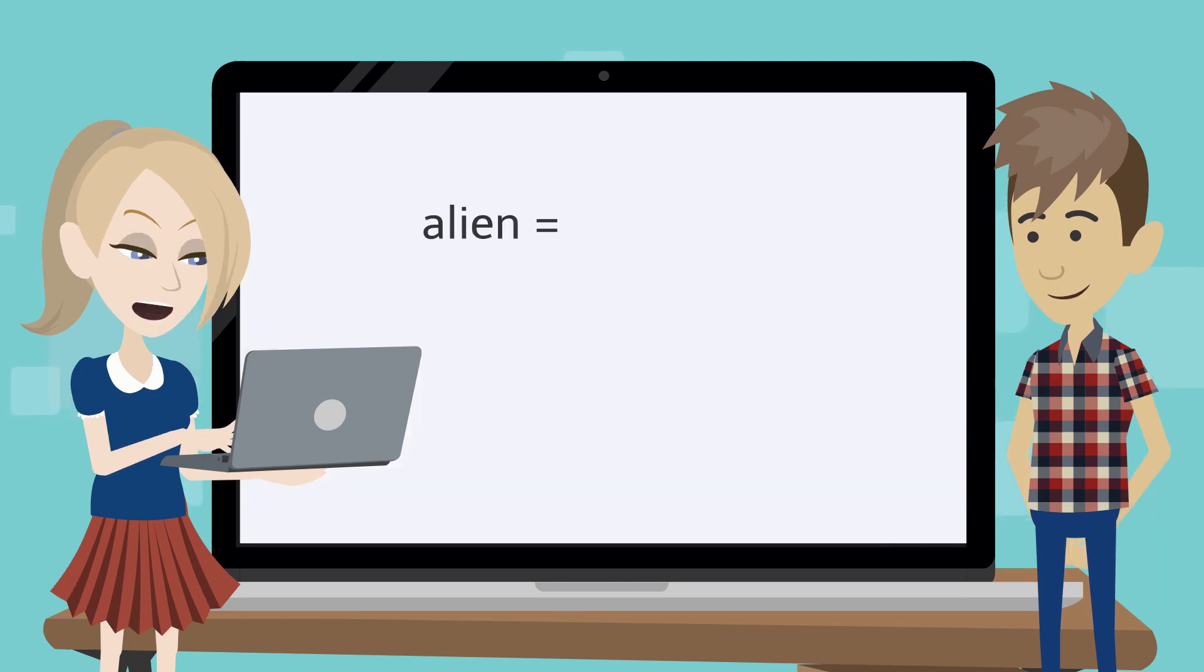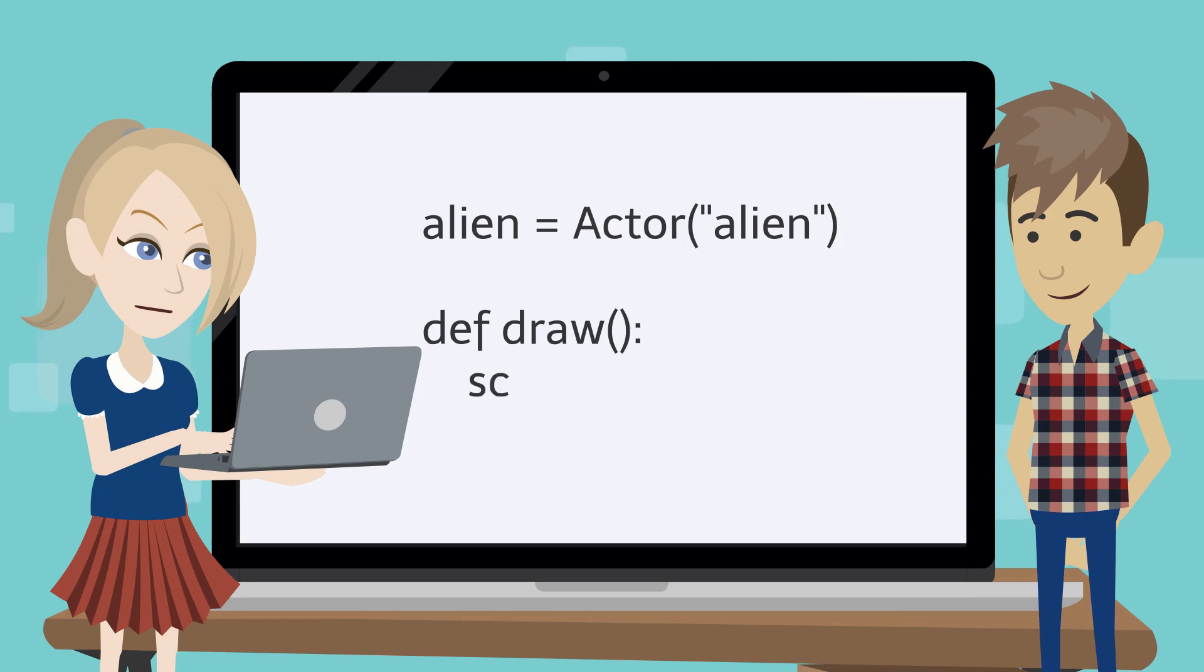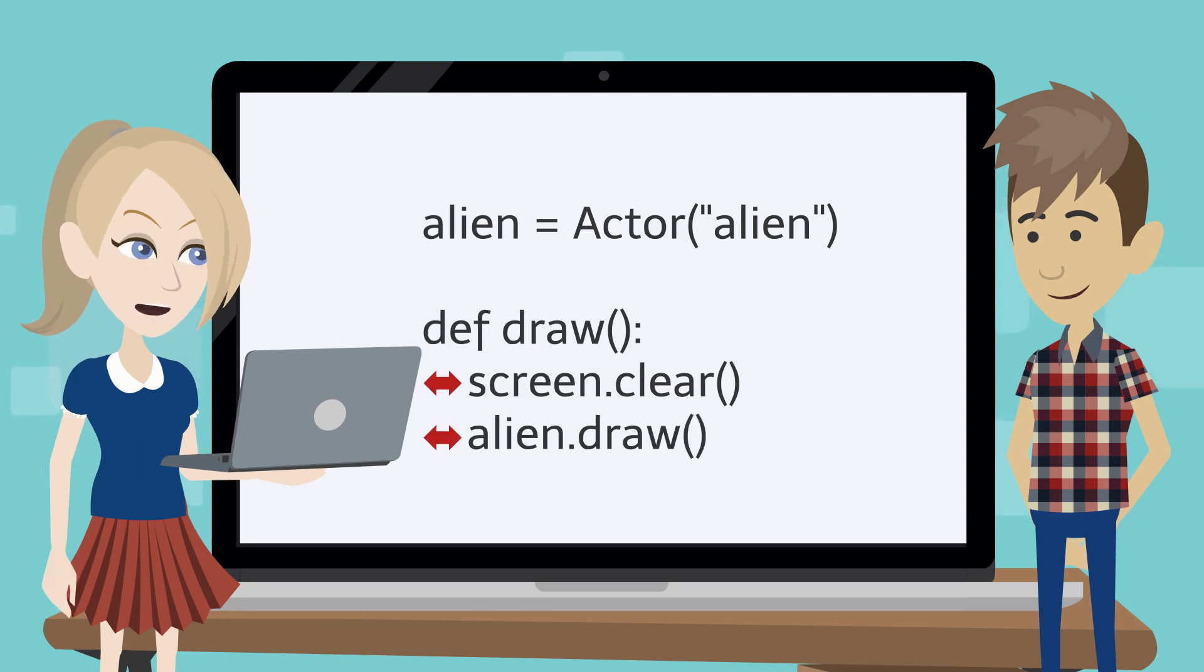This line creates a new actor called alien. We can use draw function. This line clears the screen. And this line draws the alien on the screen. Remember, we need four blank spaces here as indents to separate different blocks of code.